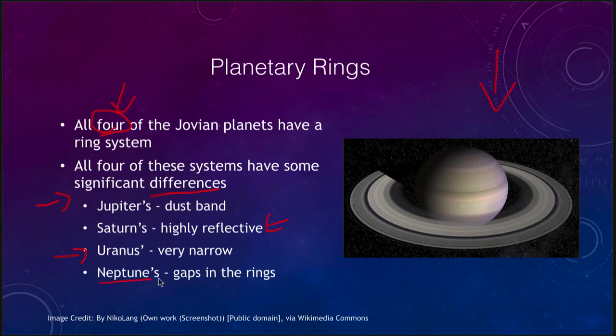Neptune's are unusual in that there are gaps in the rings — they are not nice, smooth rings, but there are actually areas where the material is denser and areas where material is less dense.